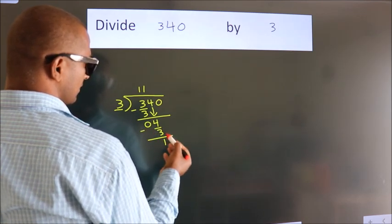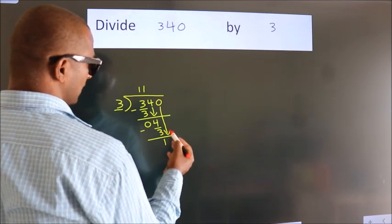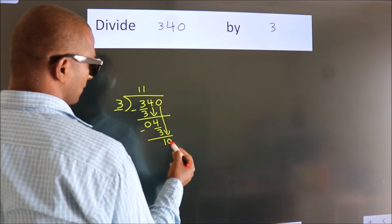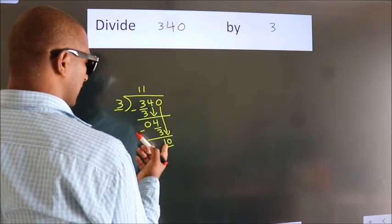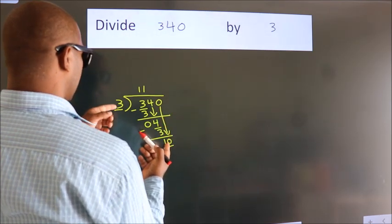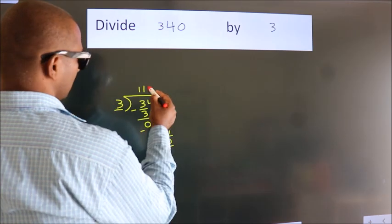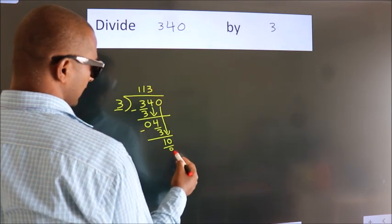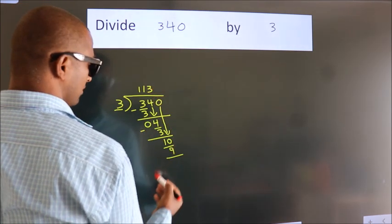After this, bring down the beside number. So 0 down. So 10. A number close to 10 in the 3 table is 3 times 3, which is 9. Now we subtract.